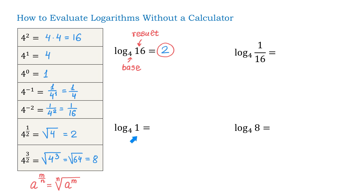In the next example, we will evaluate log base 4 of 1. So, 4 to what power is equal to 1? We see that 4 to the 0 power equals 1. Therefore, log base 4 of 1 equals 0, because 4 to the 0 power equals 1.